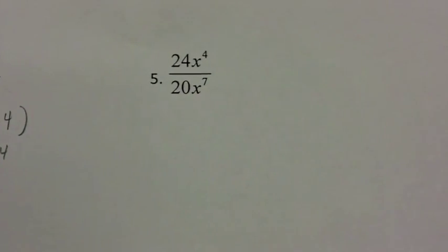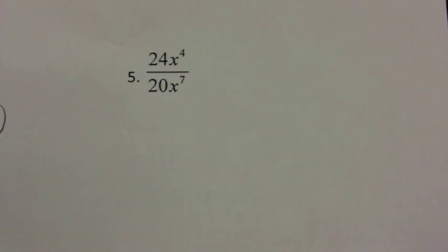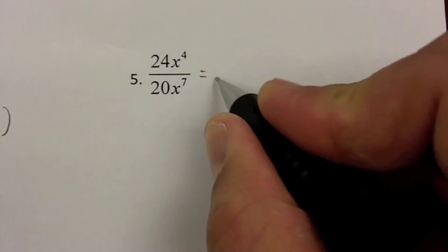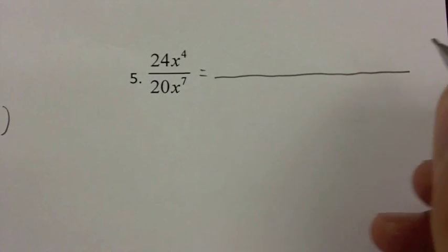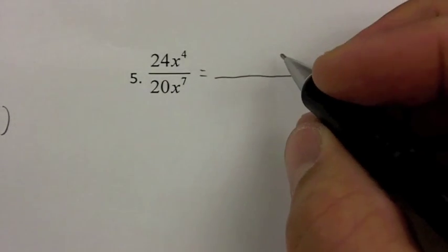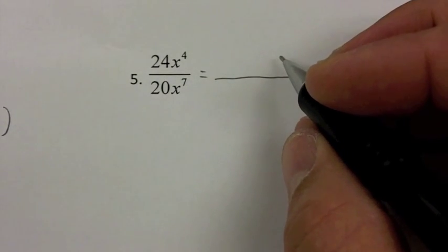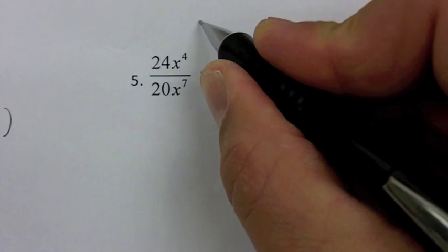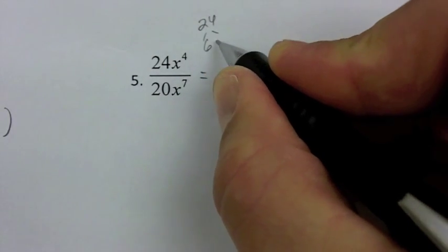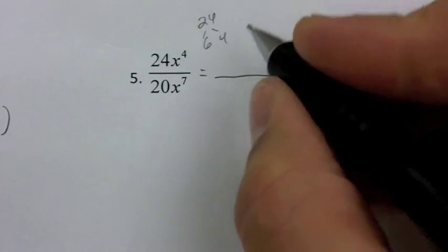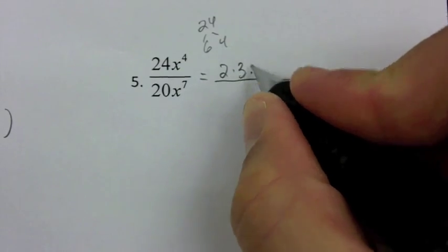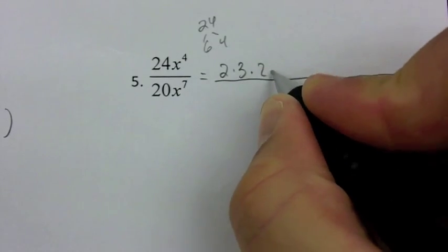Let's take a look now at question 5. In question 5, we're just asked to simplify this, so we're going to factor this out. For 24, I'm thinking 4 times 6. So 24 goes to 4 and 6, and 6 isn't prime, so that's 2 times 3. And 4 is 2 times 2.